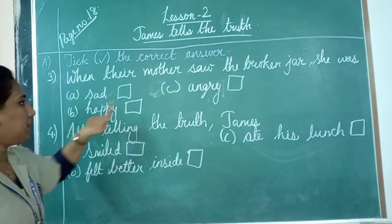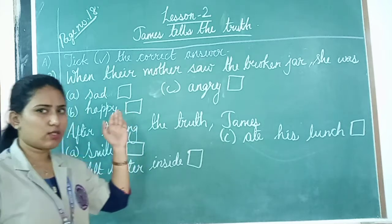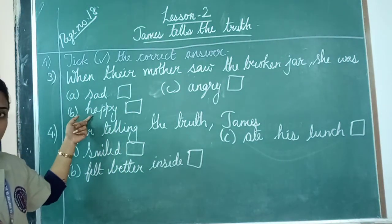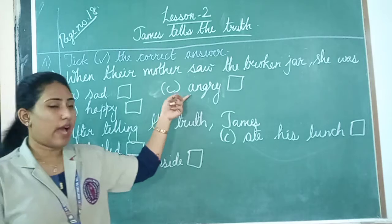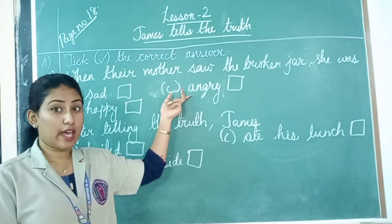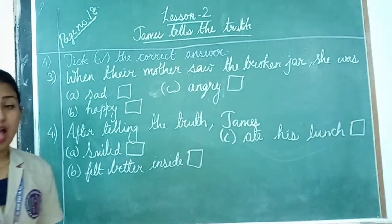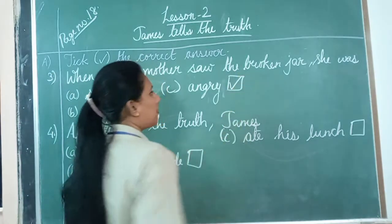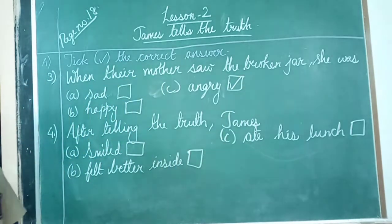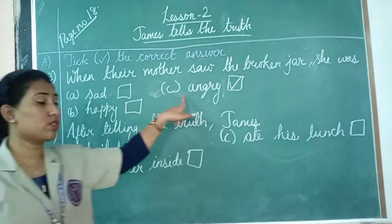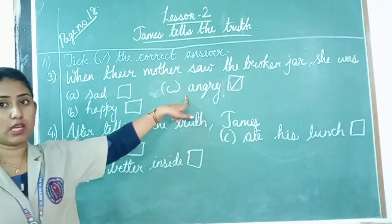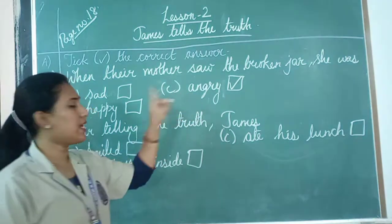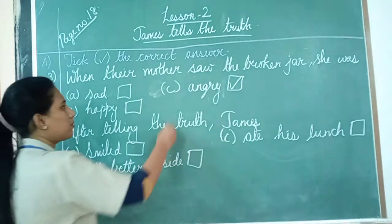Options are: sad, happy, or angry. Was she sad? No. Was she happy? No. Angry? Yes — she was angry and she asked them angrily, 'Who broke the jar?' She was not sad or happy, she was angry. So the correct answer is option C — tick on option C, everyone.